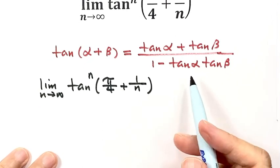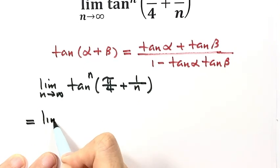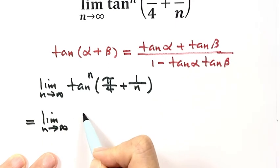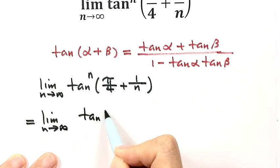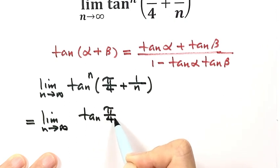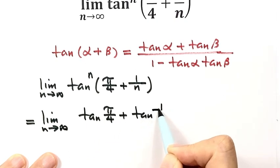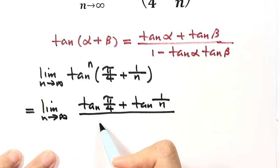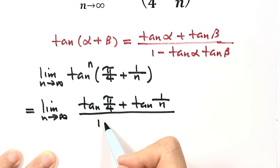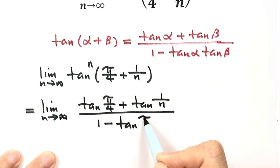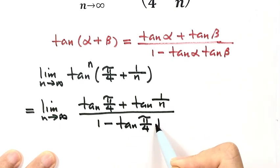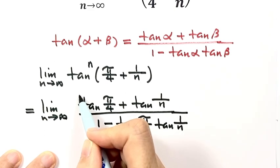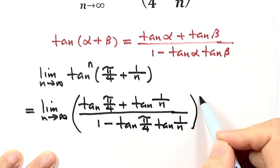First let's apply this formula. So now we have tangent (pi over 4) plus tangent (1 over n), over 1 minus tangent (pi over 4) times tangent (1 over n), then raised to the power of n.